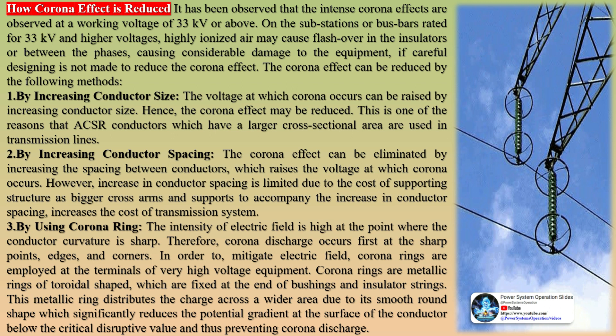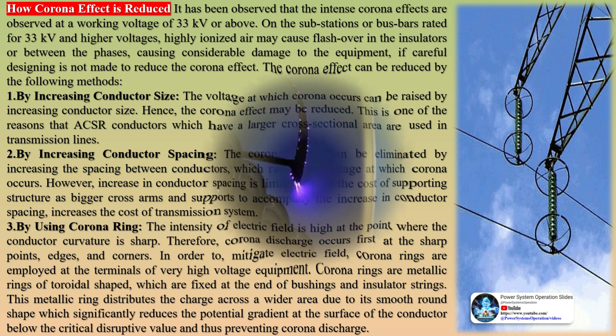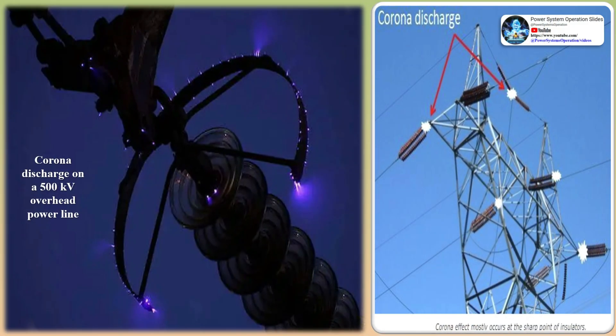Improving insulator performance by using insulators with higher pollution flashover performance and better contamination resistance helps mitigate the effects of corona discharge on insulator surfaces, reducing surface leakage current and corona losses. Optimized transmission line routing — planning the route of transmission lines to avoid areas with high pollution levels or adverse environmental conditions — minimizes surface contamination on insulators, thereby reducing the risk of corona discharge. Using conductors with larger diameters reduces the electric field intensity around the conductors, and increasing conductor size also reduces the surface current density, which can contribute to corona formation.